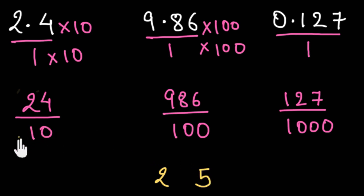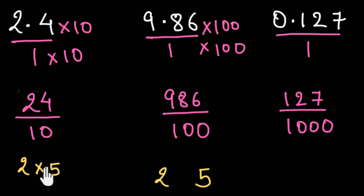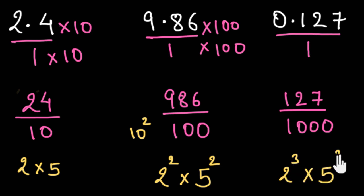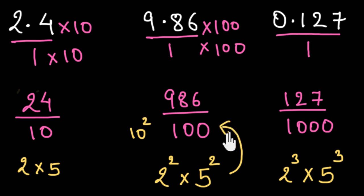Let's try to see what this denominator is made up of. For example, 10 can be prime factorized as 2 times 5. What about 100? 100 is nothing but 10 squared, which can be prime factorized as 2 squared times 5 squared. 1000 is 10 cubed, so this can be prime factorized as 2 cubed times 5 cubed. So having equal numbers of 2s and 5s in the denominator always gives us a 10 or a power of 10, which means the decimal form would be terminating.